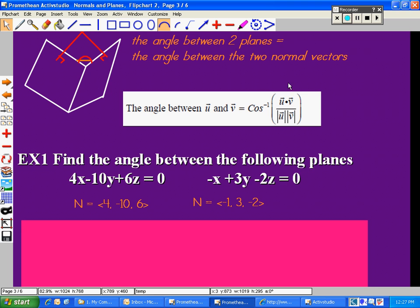So now we use the angle between formula. Find the angle between the two normal vectors. First find the dot product, then find the magnitude of each, and then take the cosine inverse.